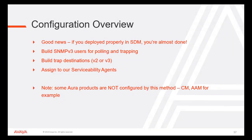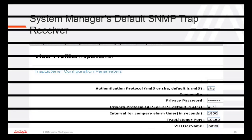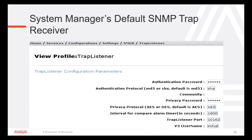Configuration overview: If you have deployed properly in SDM then you are almost done. Build SNMP version 3 users for polling and trapping. Build trap destination version 2 or version 3. Assign to serviceability agents — note some Aura products are not configured by this method, for example CAM and AAM. System Manager's default SNMP trap receiver is found at Home > Services > Configurations > Settings > SMGR > Trap Listener. As per your requirement you can change the privacy password and the authentication password.